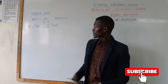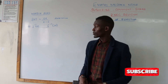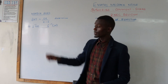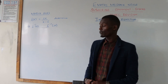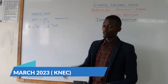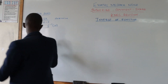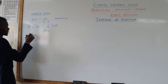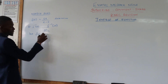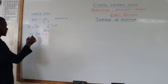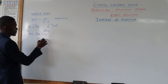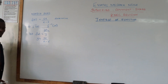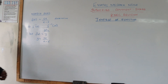In question number 2, from the March series, you are given a function and you have to determine the inverse, then evaluate when the value of x is 30. Again, we let f(x) be written in terms of y. So we shall have y equals 5x over x minus 5. Again, we make x the subject of the formula.